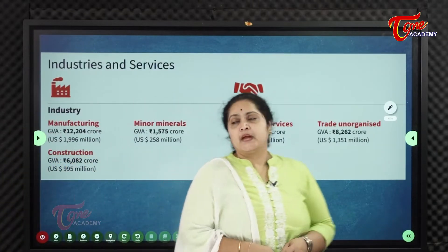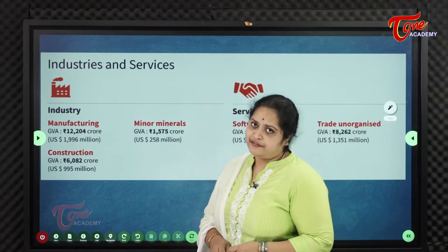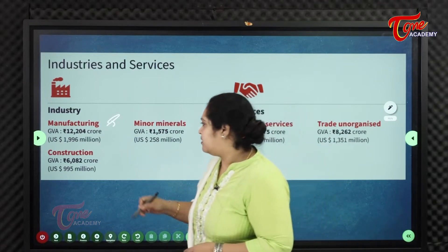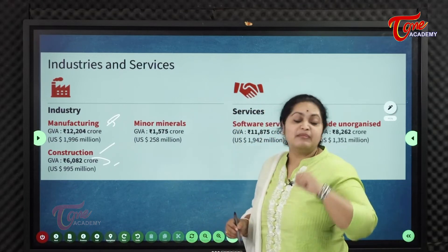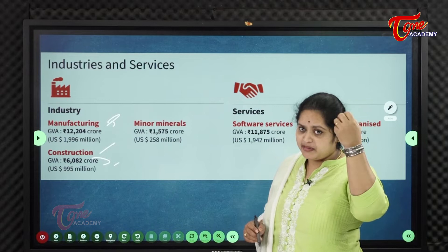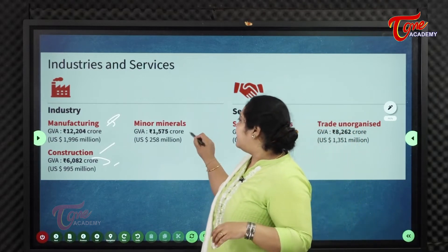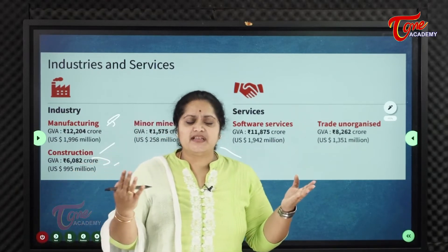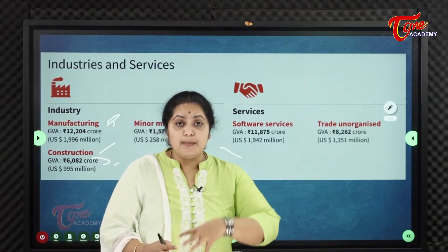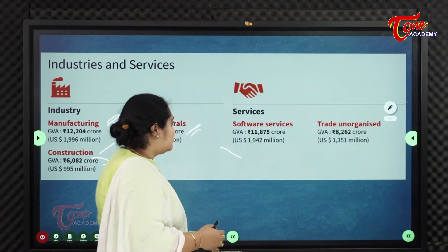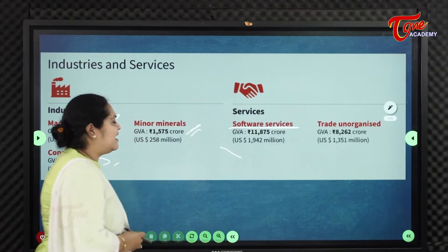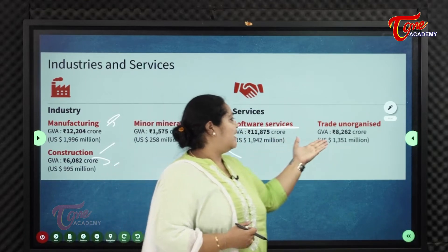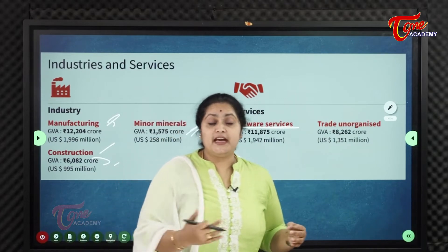Coming to industries and services: the manufacturing sector contributes 12,204 crores of GVA, construction contributes 6,000 crores, and minor minerals contribute 1,571 crores. In the service sector, software and services account for nearly 11,875 crores of GVA, while unorganized trade contributes 8,286 crores.